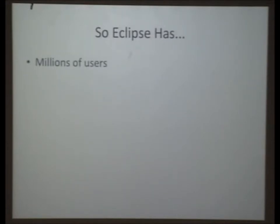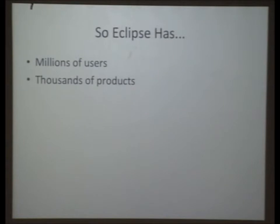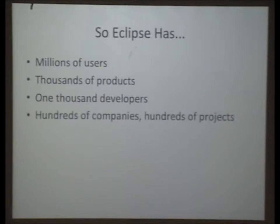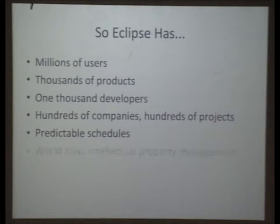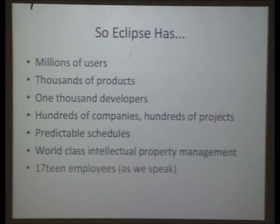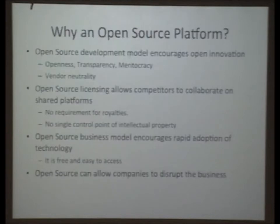These guys from IBM created an ecosystem with millions of users, many thousands of products that ship today, with about a thousand full-time developers that built this platform. Hundreds of companies. Predictable schedules — everybody ships predictably. World-class intellectual property management. Seventeen employees — actually by July it will be eighteen. And zero product managers who manage this type of stuff.